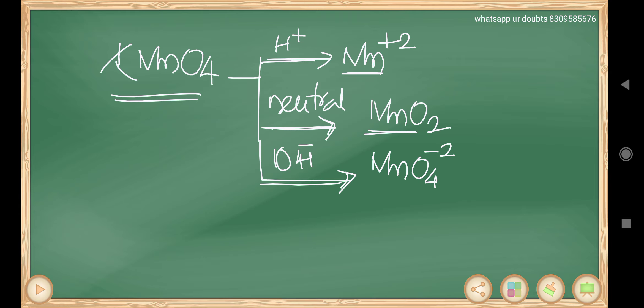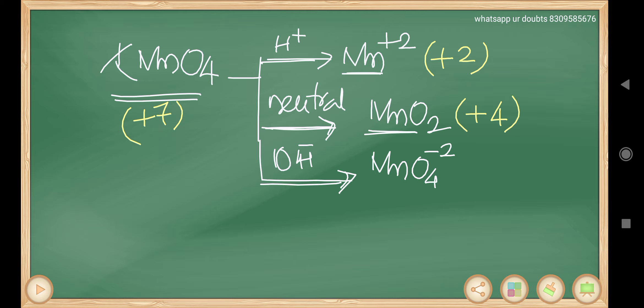Let us see the oxidation states. In KMnO4, manganese oxidation state is +7. It changes to +2, +4, or +6 in the respective products. KMnO4 is an oxidizing agent because it undergoes reduction — you can check: +7 to +2 is definitely reduction, so it is an oxidizing agent.